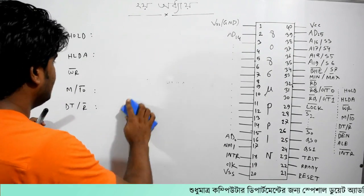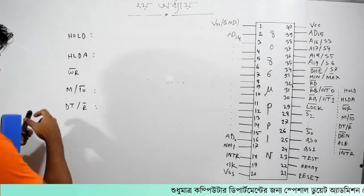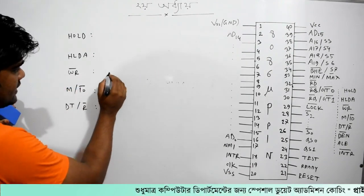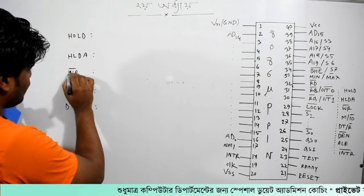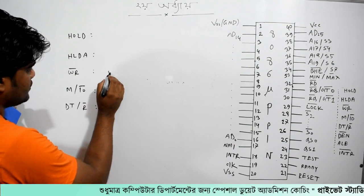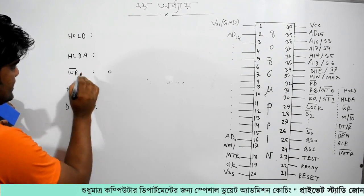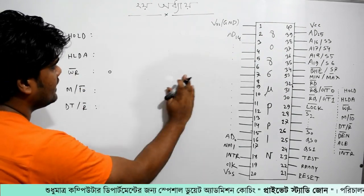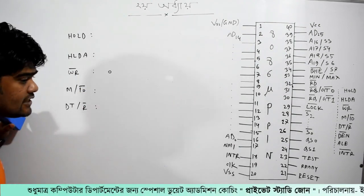Here we go, this is the right pin. Right pin means that this is set, and this is 0 to set.